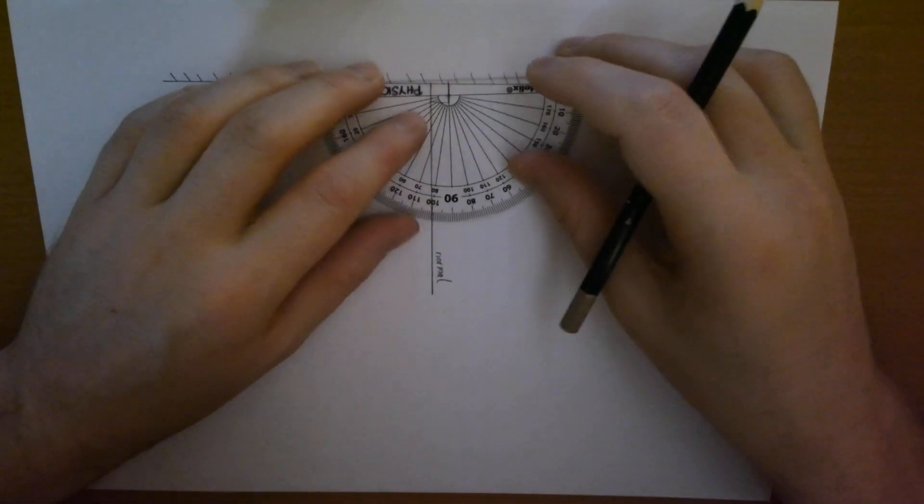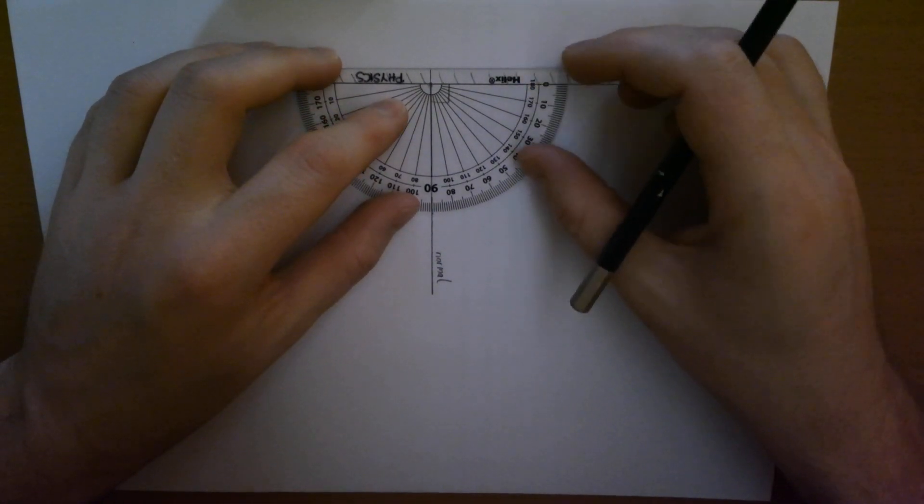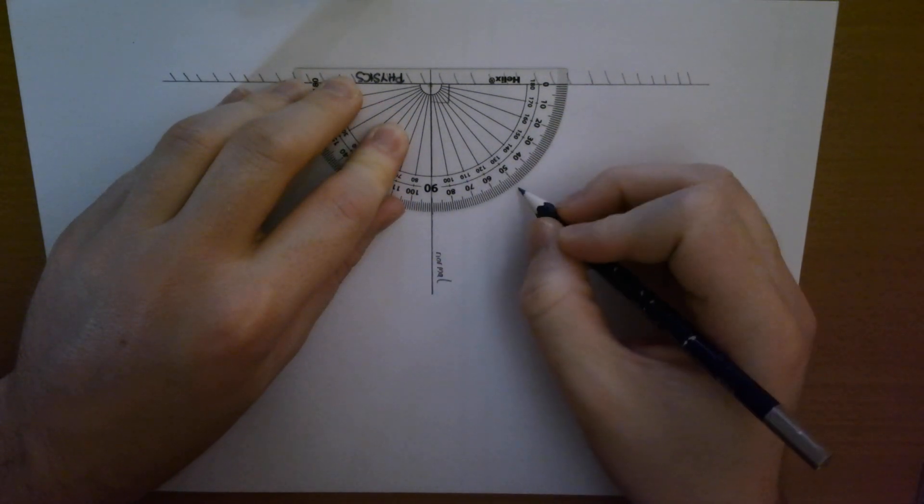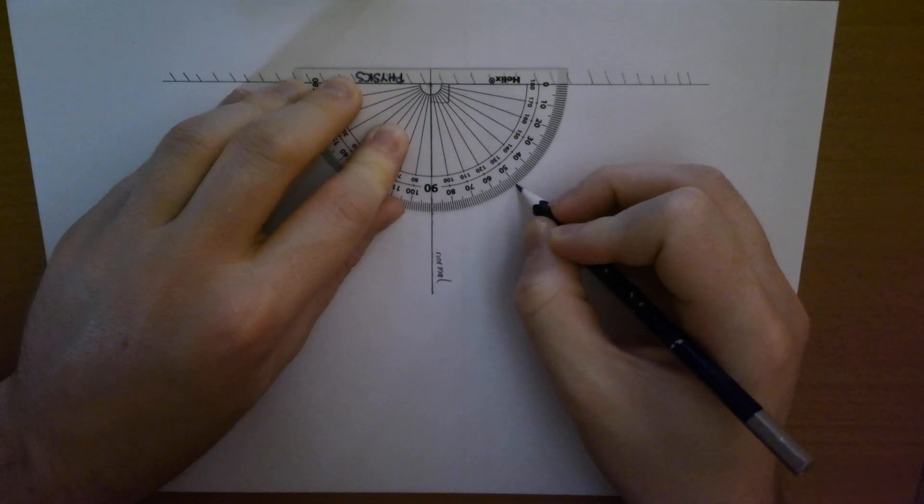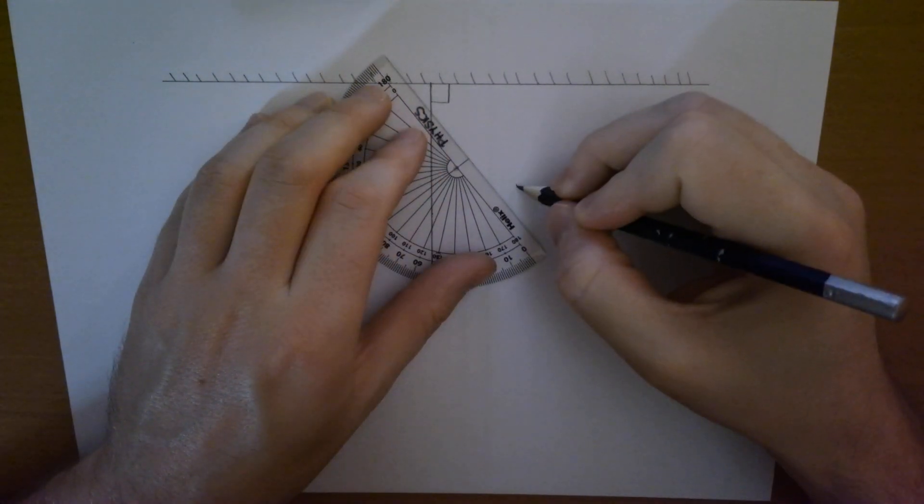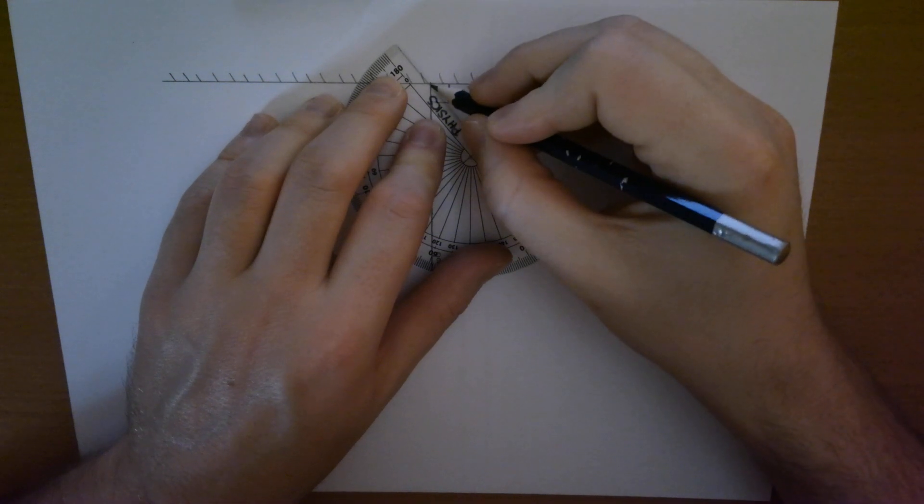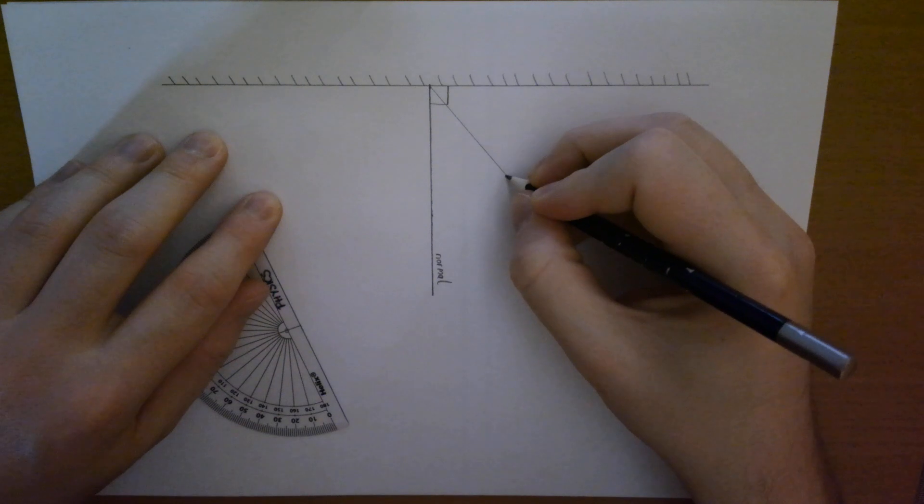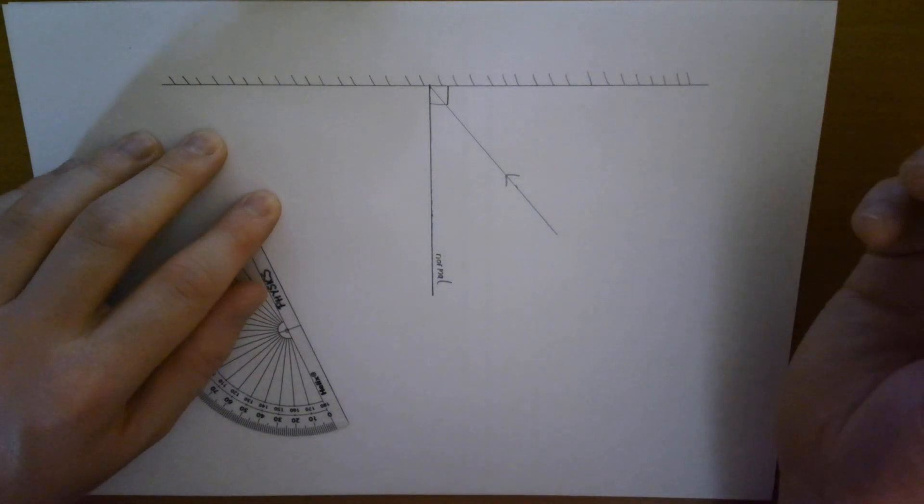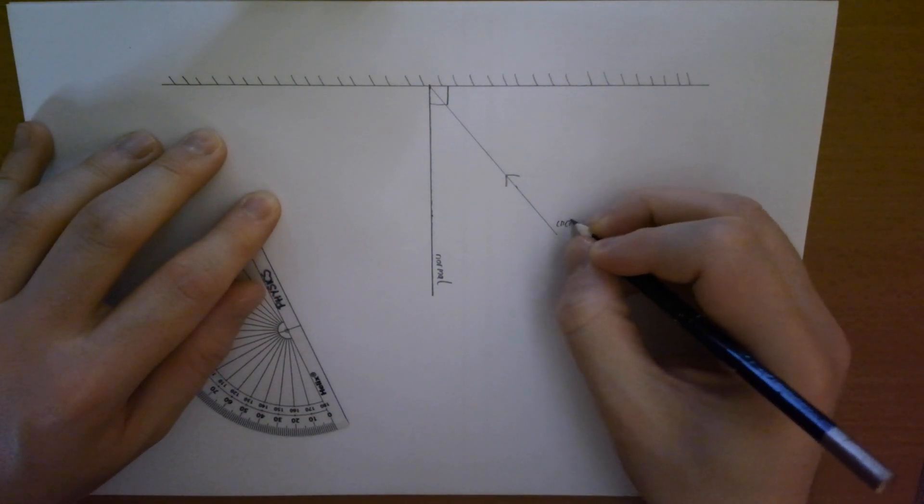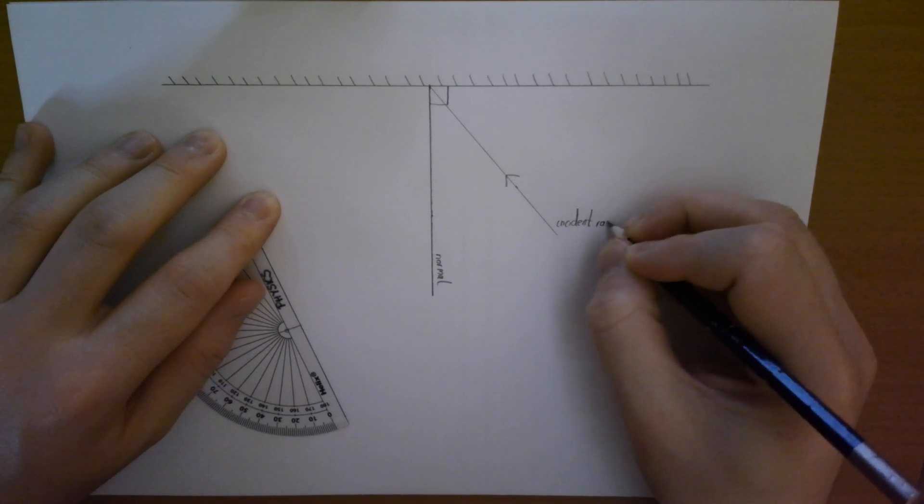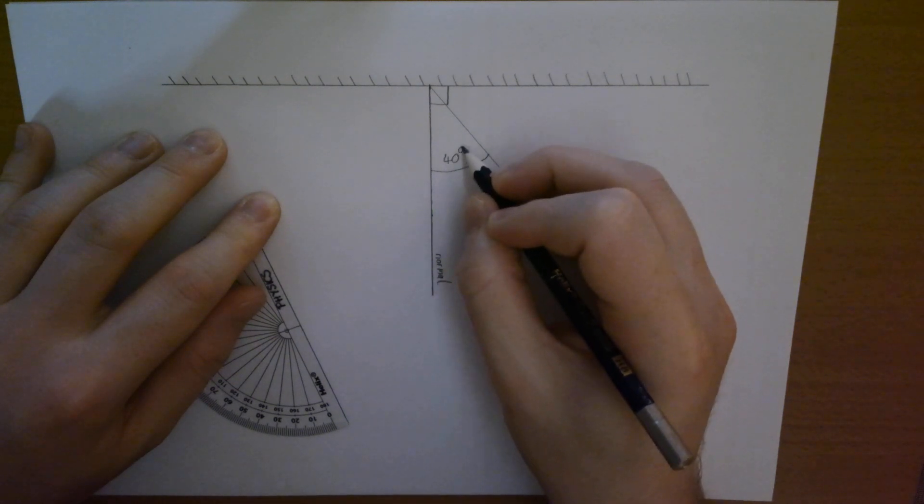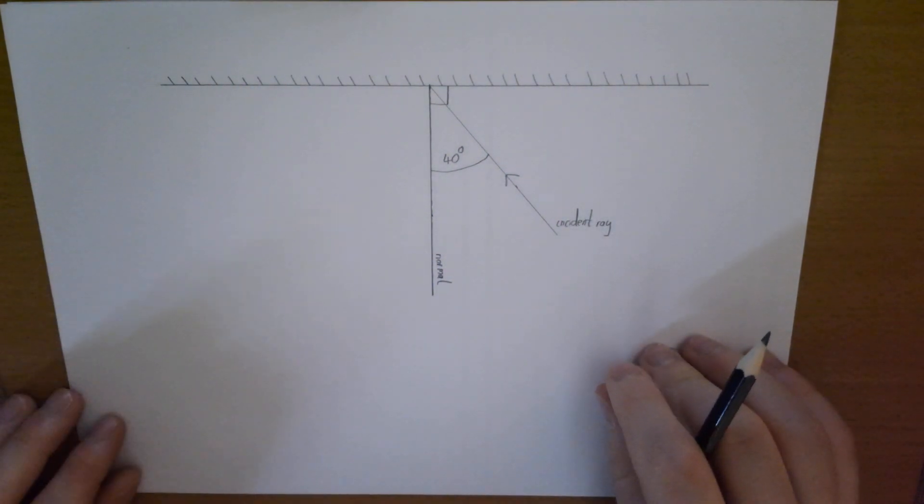What we need at this point is an incident ray. What I'm going to do - 10, 20, 30, 40 - just to match the diagram we drew before, is draw an incident ray at 40 degrees. I'll put an arrow on that to show it's the incident ray coming in, and label it. That angle is 40 degrees, and that is the incident angle.